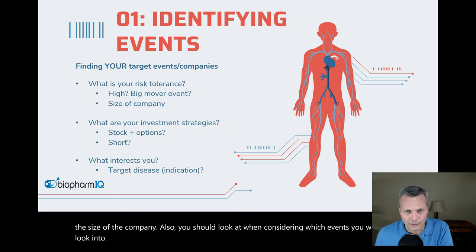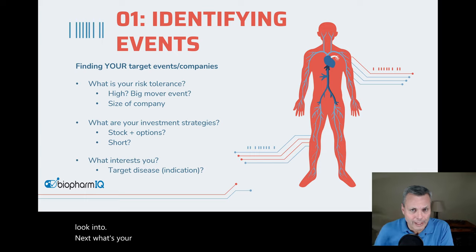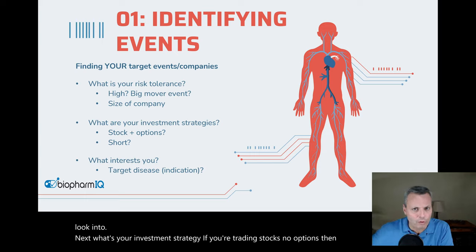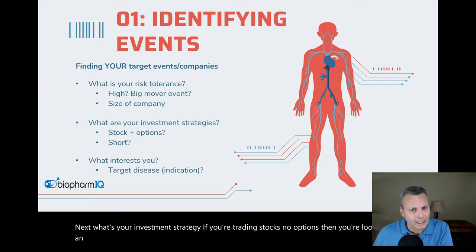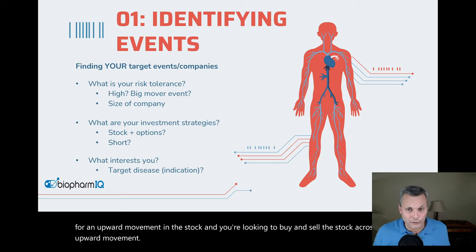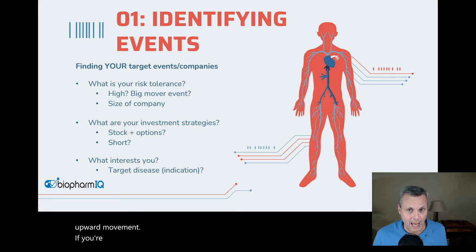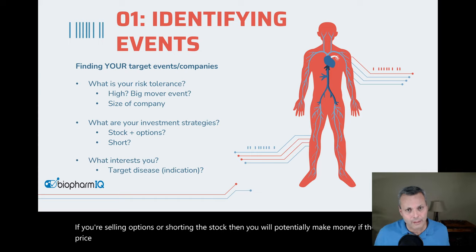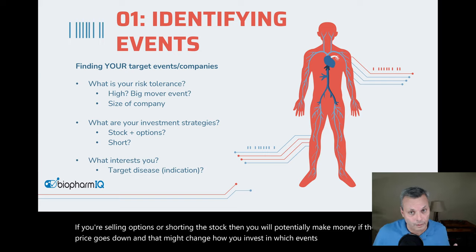Next, what's your investment strategy? If you're trading stocks with no options, you're looking for an upward movement and you're looking to buy and sell across that upward movement. If you're selling options or shorting the stock, you'll potentially make money if the stock price goes down, and that might change how you invest and which events you invest in or avoid.